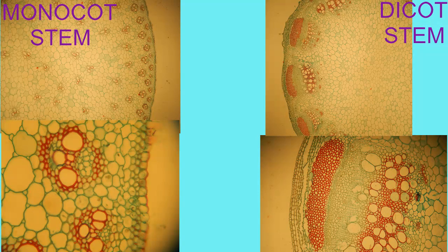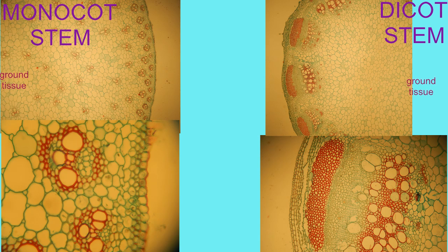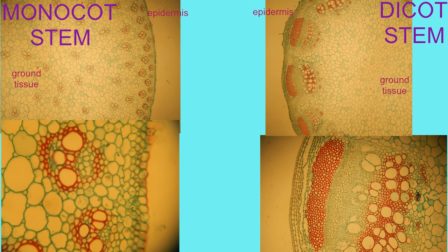There are similarities when comparing the stems of monocots — the group which includes grasses and lilies — and dicots, which include the majority of flowering plants. In both stems, ground tissue composes the majority of the structure, surrounded by the external epidermis.